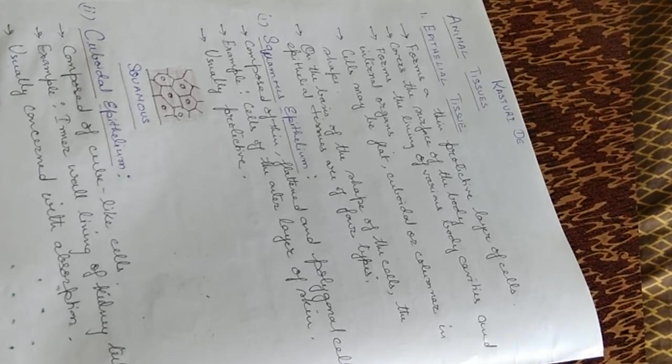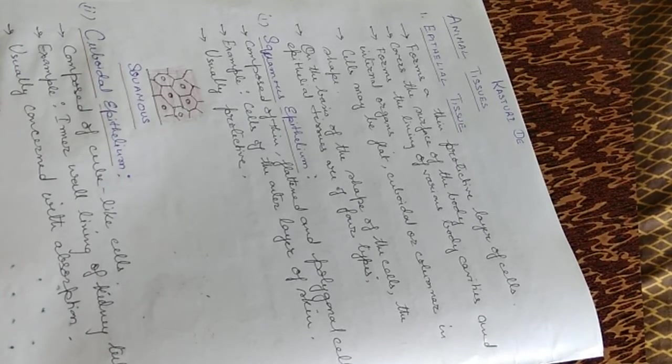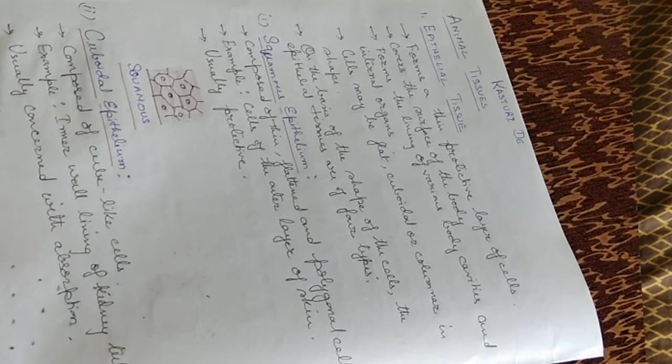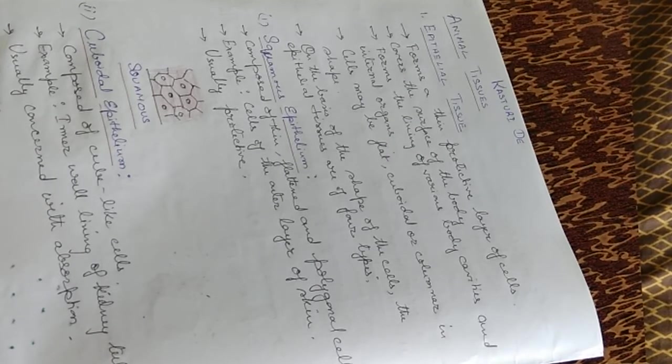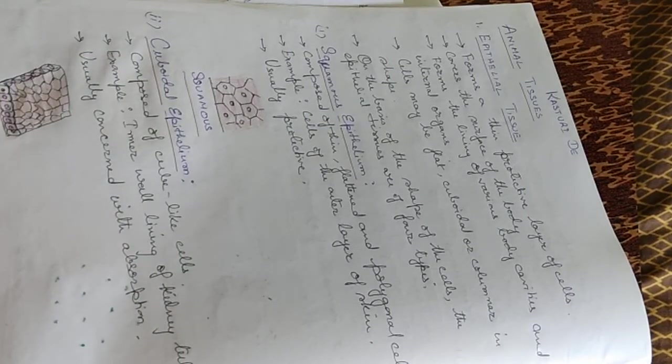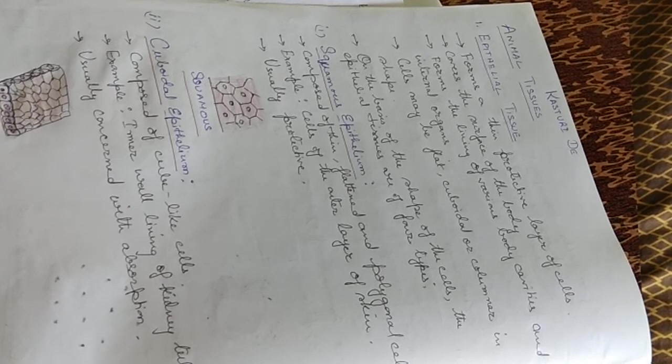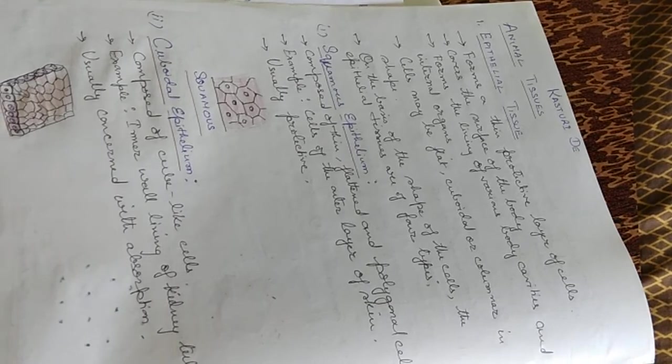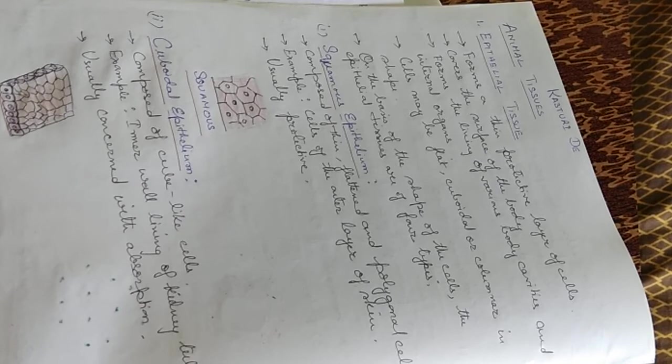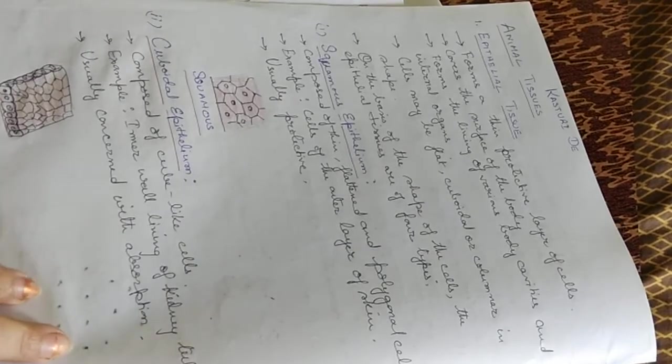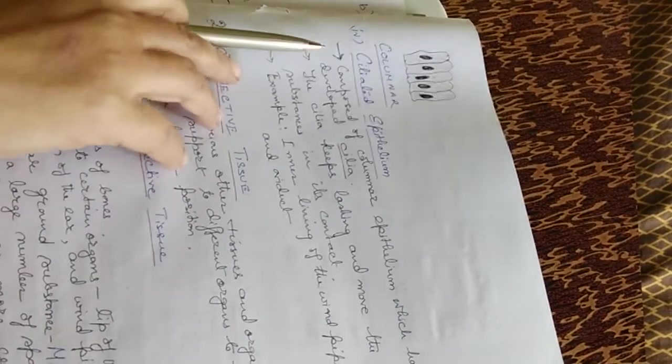The cuboidal epithelium is composed of cube-like cells. Example: inner wall lining of the kidney tubules, and they are usually concerned with absorption. Columnar epithelium are composed of vertically arranged, tall and cylindrical or columnar-like cells. Example: inner lining of the stomach and intestine. They are usually secretory in function. They secrete juices.